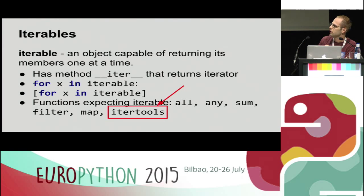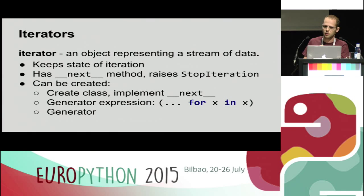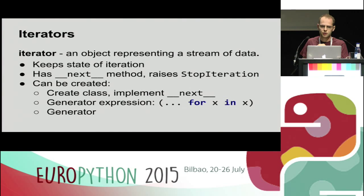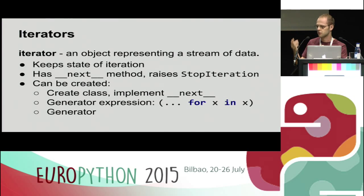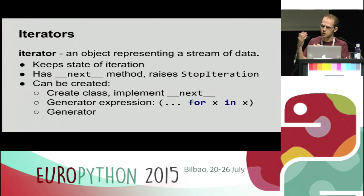I'd like to draw your attention to itertools — for those who don't know, it provides a lot of very useful functionality to work with iterables and iterators. An iterable returns an iterator. What's an iterator? The whole functionality of an iterator is to keep the current state of iteration — for example, if we're iterating a list, to remember the current element being returned. The only thing it has to do is provide a __next__ method, which produces a new value on every iteration or raises a StopIteration exception if the iterator is exhausted.